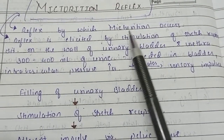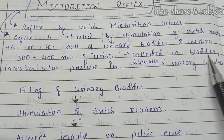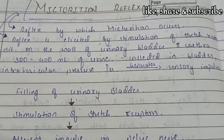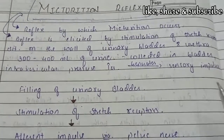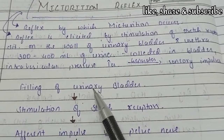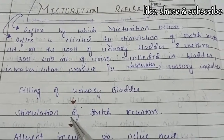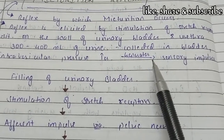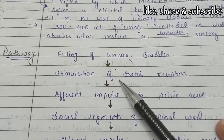The reflex is elicited by stimulation of stretch receptors situated on the wall of the urinary bladder and urethra. This process is stimulated by the stretch receptors which are present in the urinary bladder and urethra's wall. When the bladder is full, the intravascular pressure increases, indicating a full bladder.